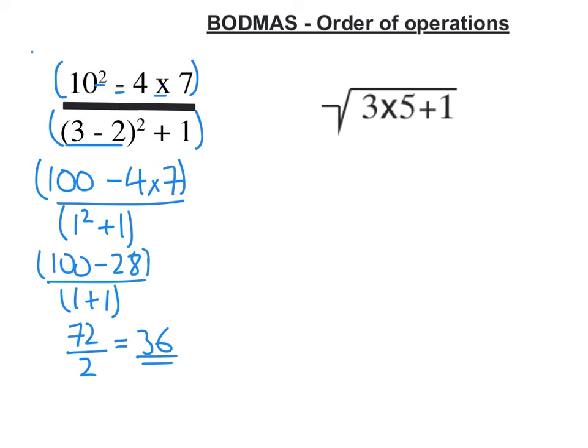Let's look at this last example. 3 times 5 plus 1, all square rooted. So there is a bracket here. So I must do things inside the bracket first. It's multiplying and adding. So multiplying is what you do first under BODMAS.